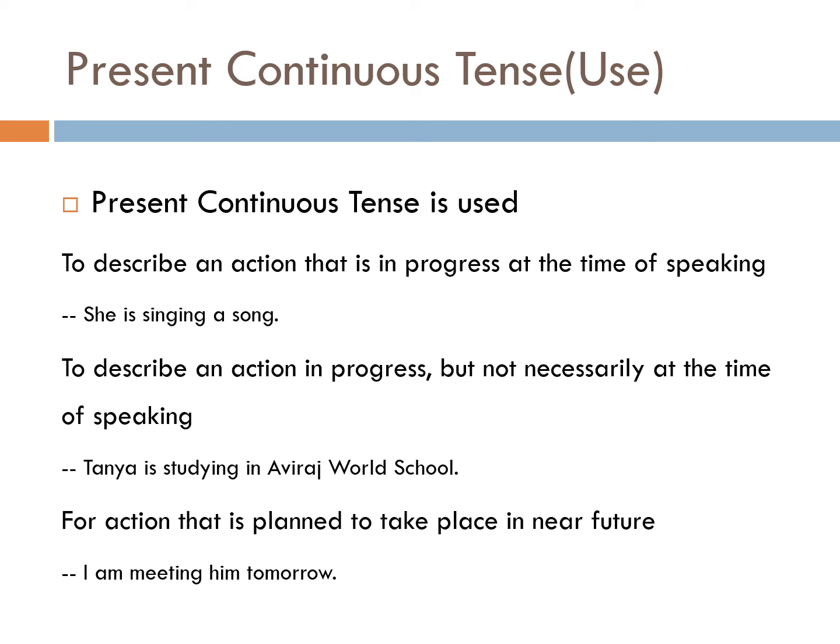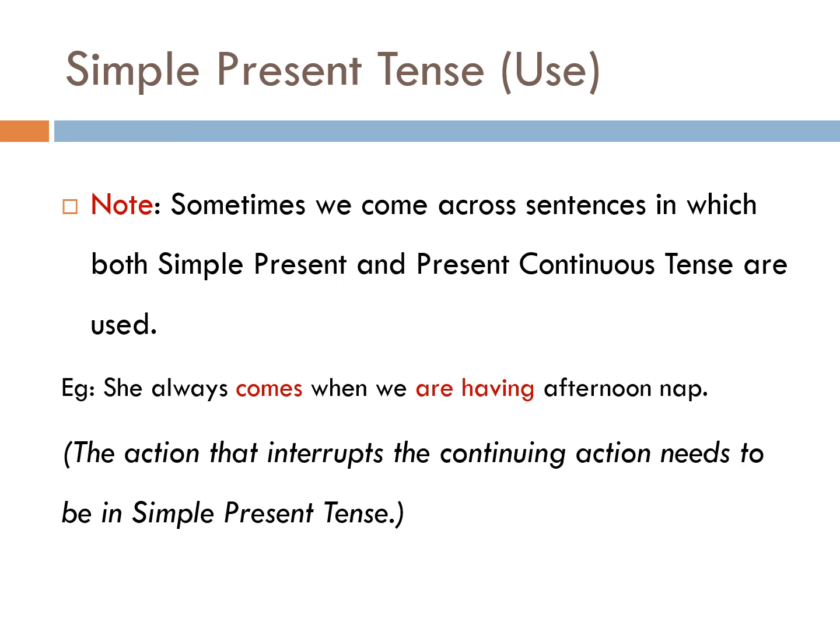Number 3: For an action that is planned to take place in the near future. कोई भी action जो की near future, immediate future के लिए plan किया गया हो, उसको refer करने के लिए भी we can use present continuous tense. For example, I am meeting him tomorrow. Sometimes we come across sentences in which both simple present and present continuous tense are used. For example: She always comes when we are having afternoon nap.